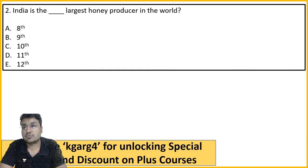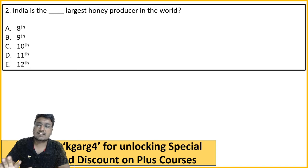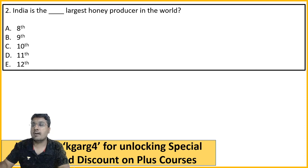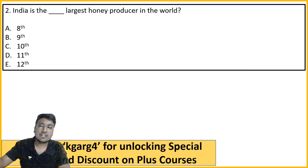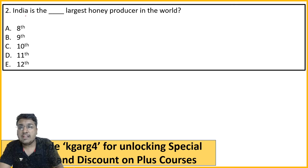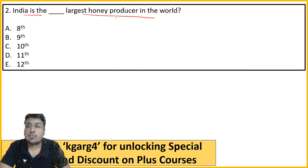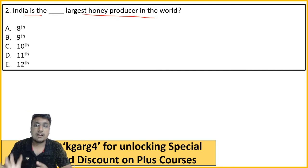I will discuss the news in detail because 2-3-4 questions can come from a single news item. So we will first see all the questions and then discuss the news. Second question: India is the dash largest honey producer in the world - what is India's rank in production?